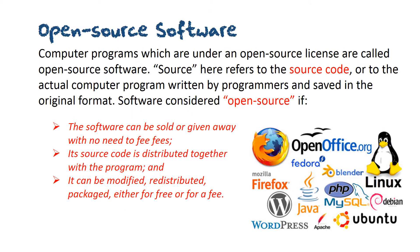First, open source software. Computer programs which are under an open source license are called open source software. Source here refers to the source code, or to the actual computer program written by programmers and saved in the original format.